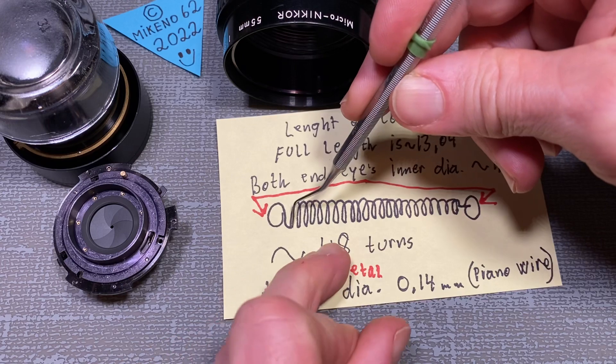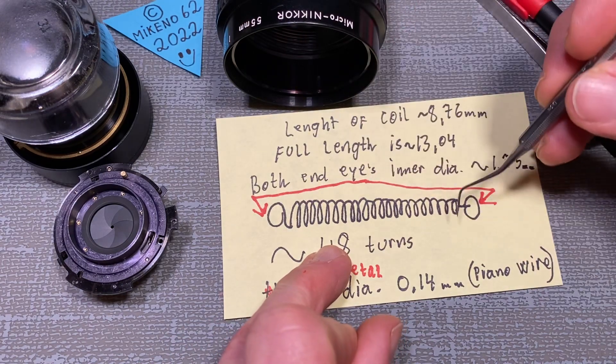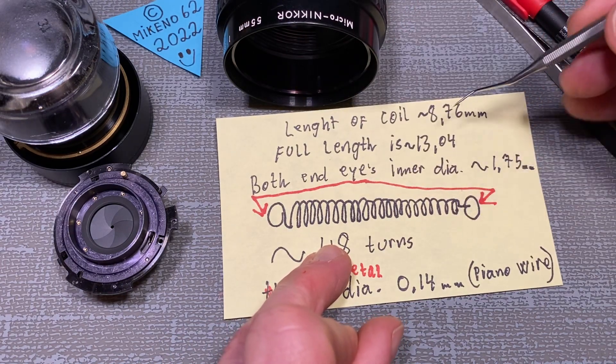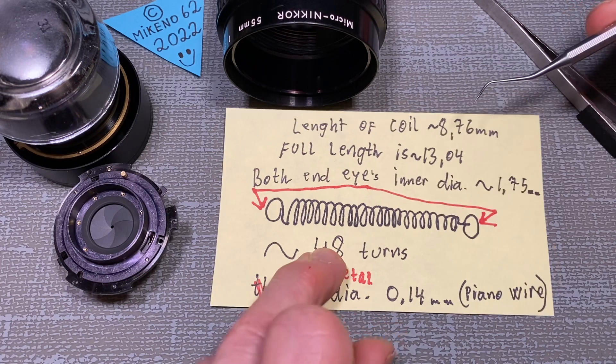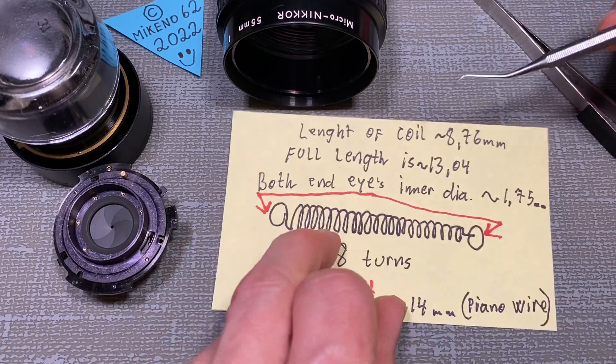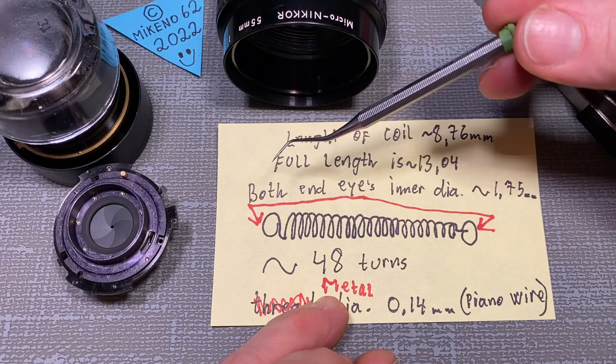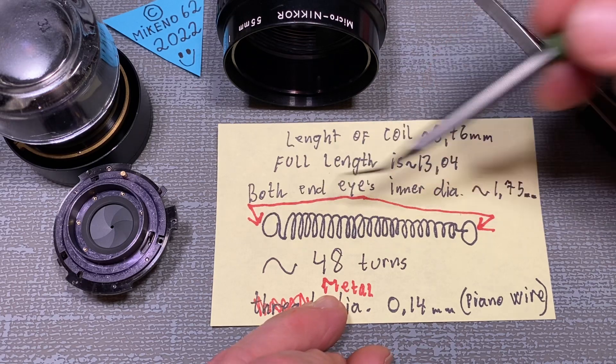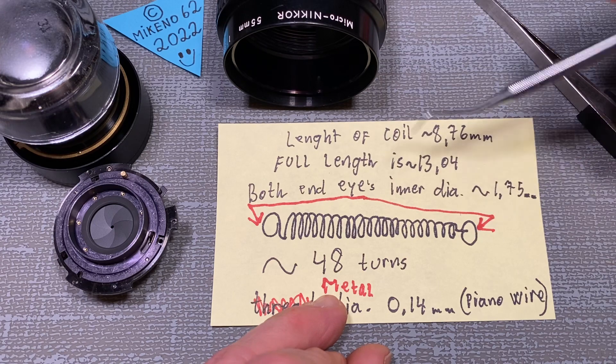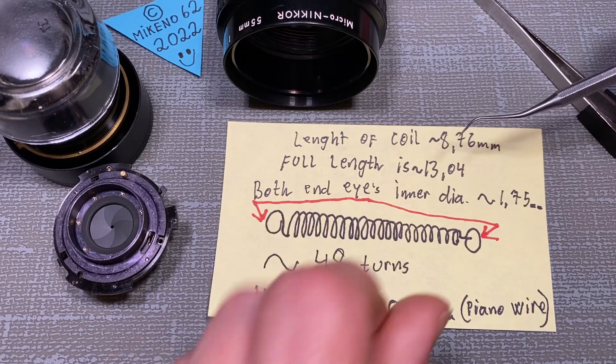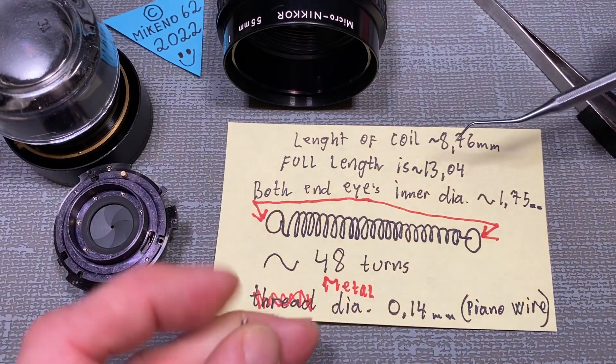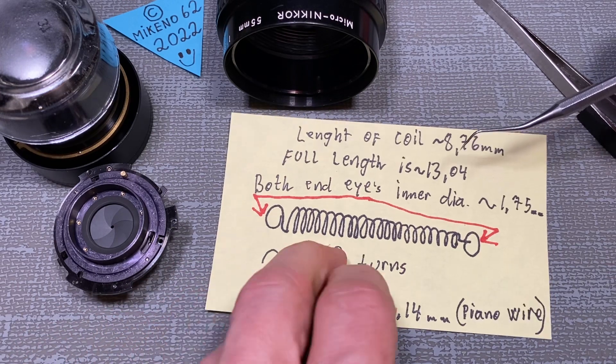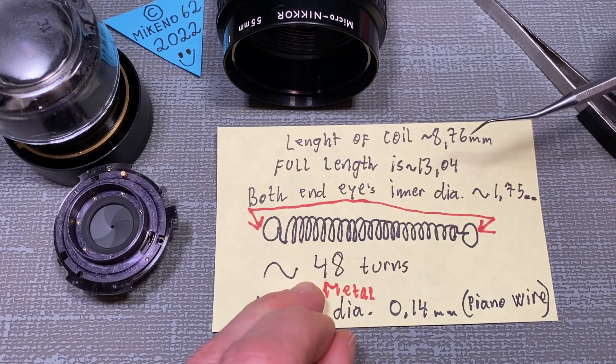From this end without the eye to the other end without the eye, it's 8.76 millimeter. The full length of the spring from the outer here to the outer here is 13.04, but I think it could also be just 13 millimeter.